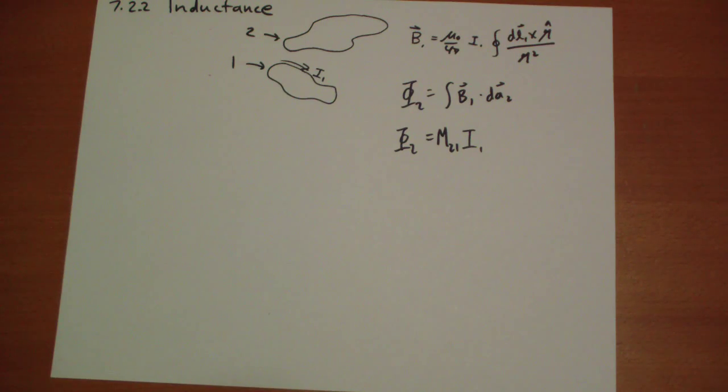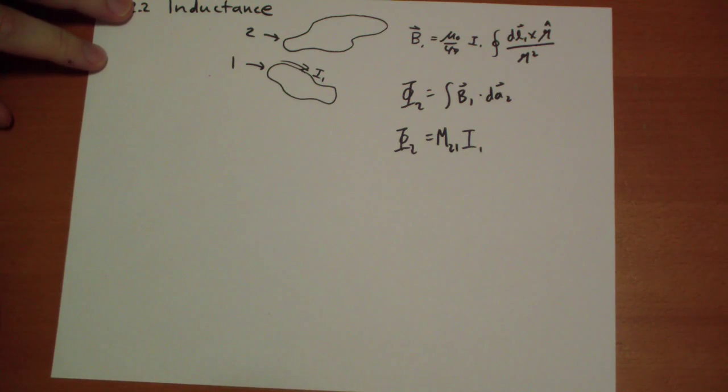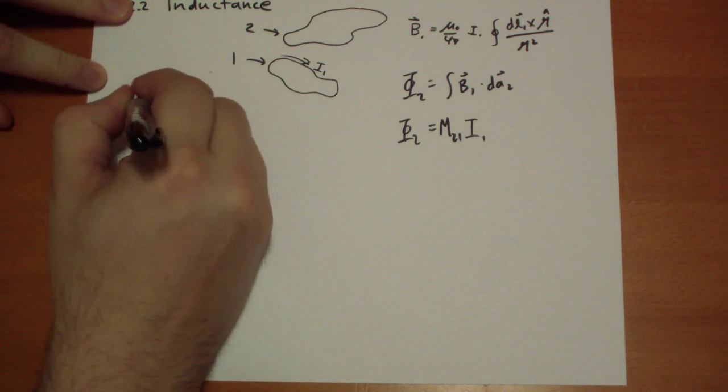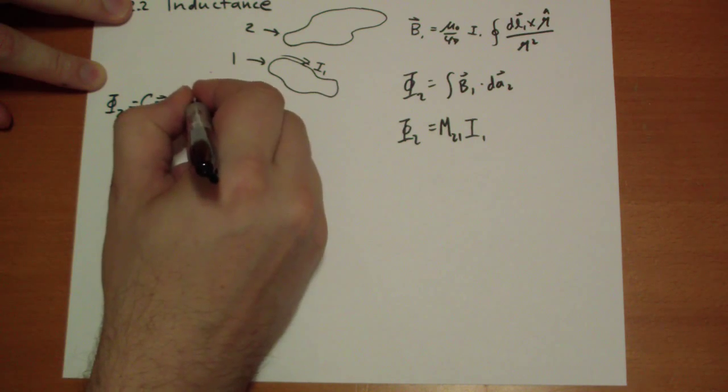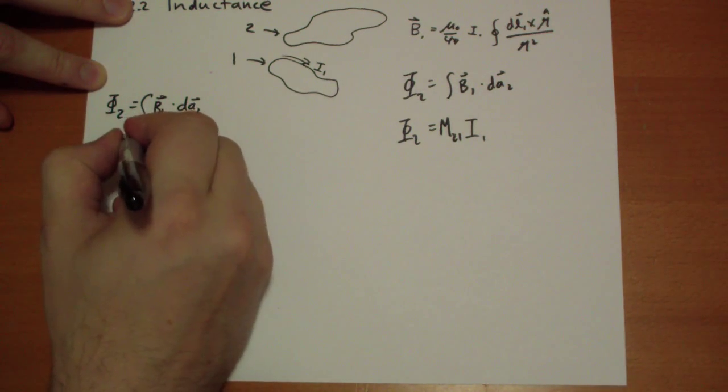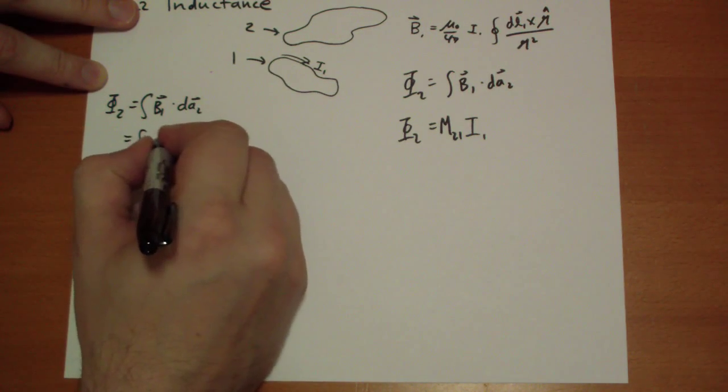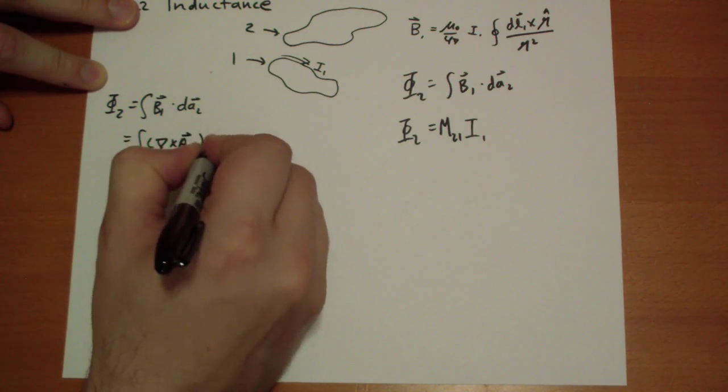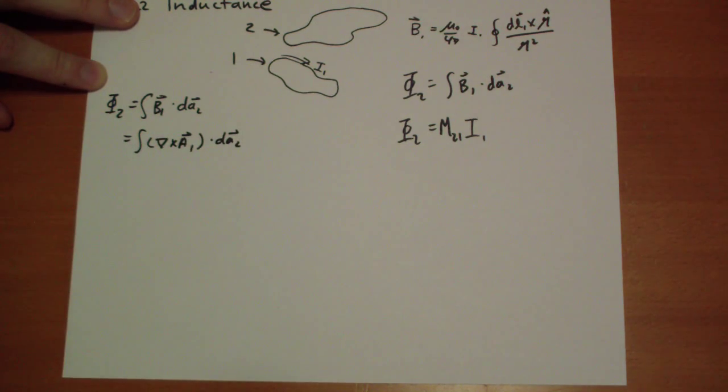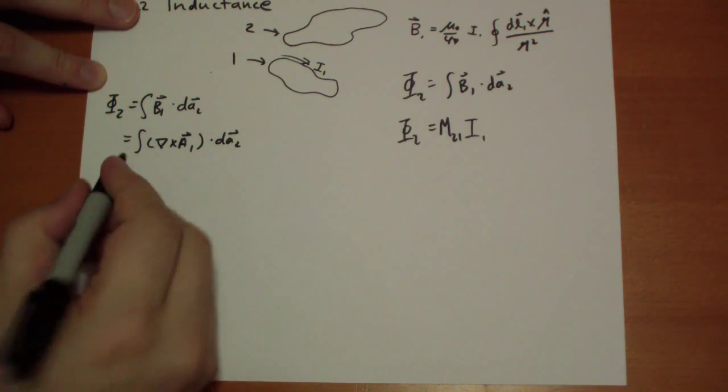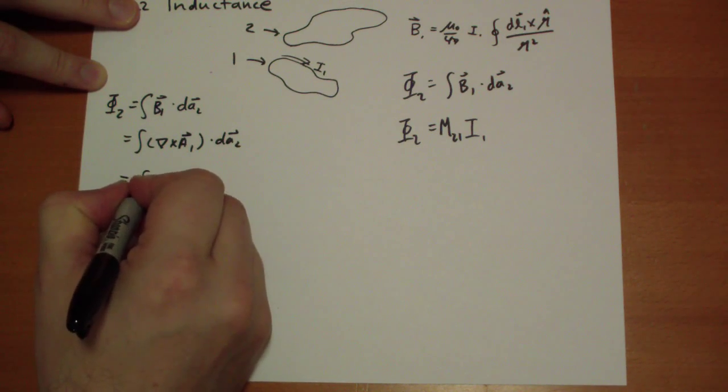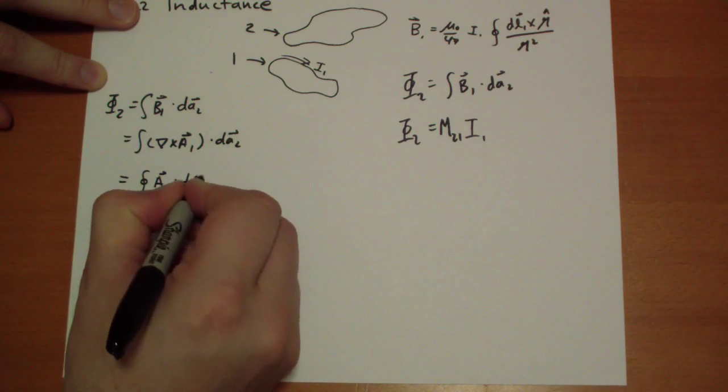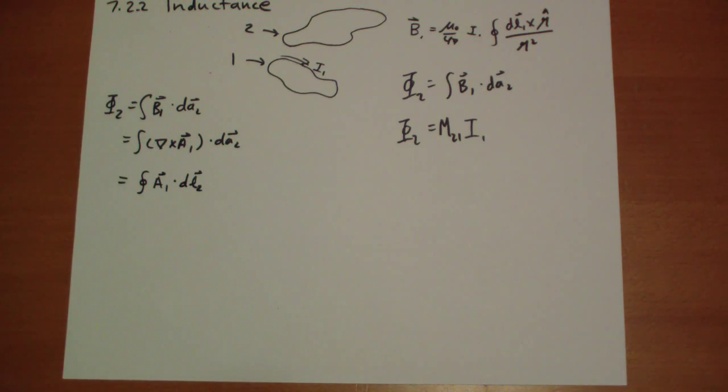So we can rewrite our flux equation using the vector potential of the magnetic field. Flux 2 is B1 passing through there, dot dA2. Remember, we're integrating across the surface here. We're going to replace the B1 with the curl of the A field, and dot that with dA2. So it's a simple substitution there. And then using Stokes' theorem, we can rewrite this surface integral as the closed path integral of A1 vector dot dL2 vector. That's Stokes' theorem in that last step there.